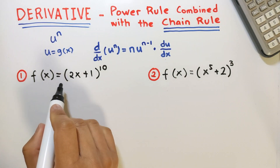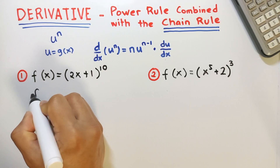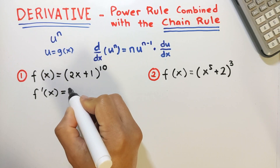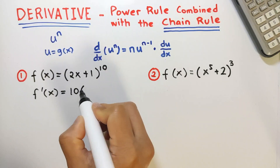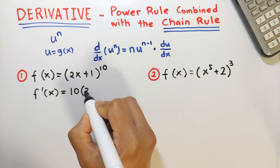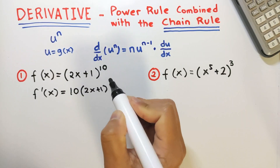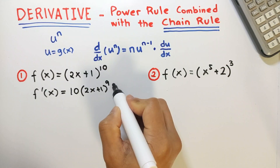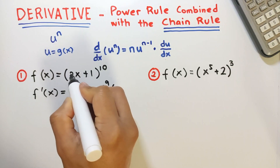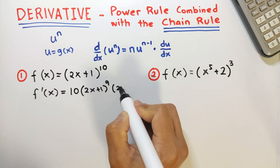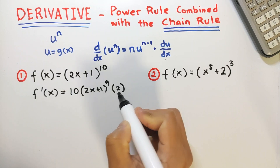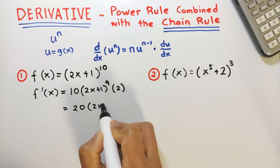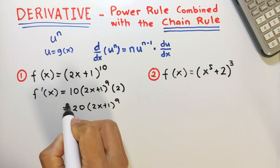Example: if we have f of x equals x plus 1 raised to 10, then f prime of x is equal to bring down 10 as a coefficient, so that's 10 times — copy the base, 2x plus 1 — raised to n minus 1, which is 10 minus 1 equals 9, and then multiply by the derivative of the base. The derivative of 2x is 2 and the derivative of 1 is 0, so we have times 2. Simplifying, that's 20 times 2x plus 1 raised to 9. This is the final answer.